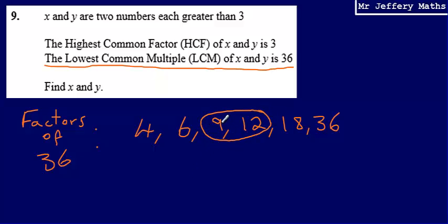The lowest common multiple of 9 and 12 is 36. So if I write out my 9 times table, I would have 9, 18, 27, 36.